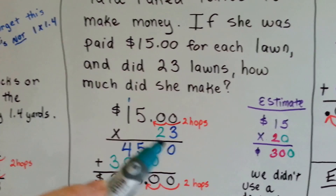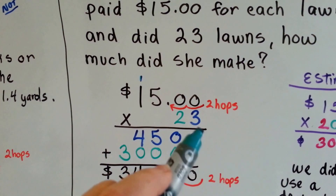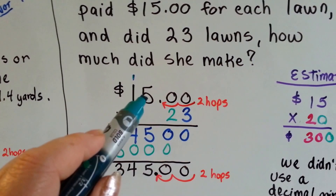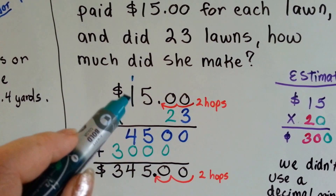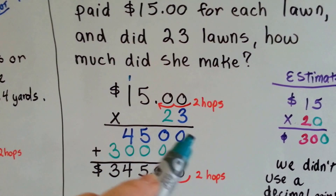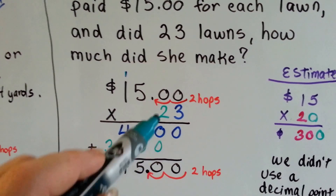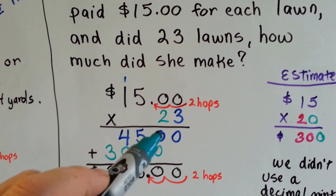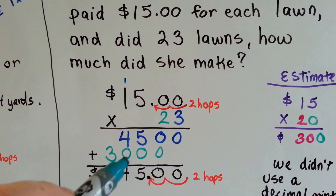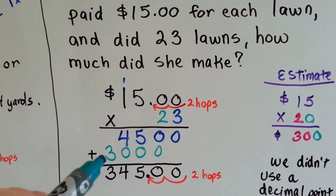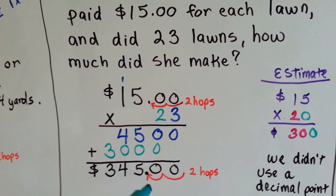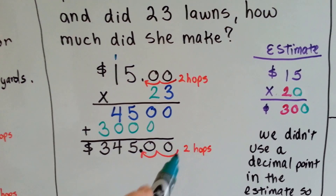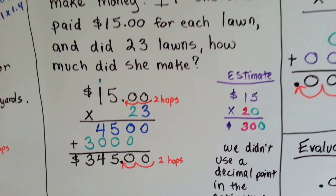So if we do 15 times 23, we're going to start with the 3 — in blue — and multiply in the ones place. 3 times 0 is 0, 3 times 0 is 0, 3 times 5 is 15. We carry the 1 and put the 5 down. 3 times 1 is 3, and the extra 1 is 4. So we have 4, 5, 0, 0 for the ones place. Now the green is the tens place. Because we're multiplying the tens place, we start putting the answer in the tens place. 2 times 0 is 0, 2 times 0 is 0, 2 times 5 is 10. We carry the 1 and put the 0 down. 2 times 1 is 2, and 1 more is 3. Now we add them all up: 0, 0, 5, 4, and 3. We count our hops in the problem: 1, 2. We put that many in the product: 1, 2. And we see she made $345 from raking leaves.